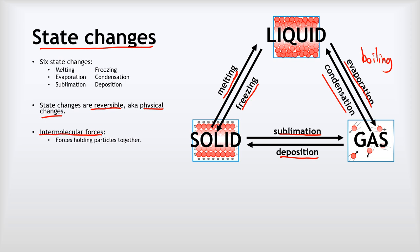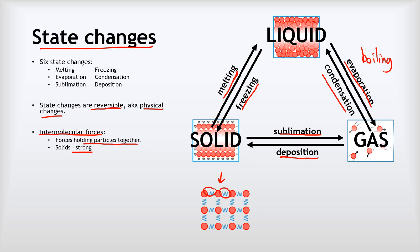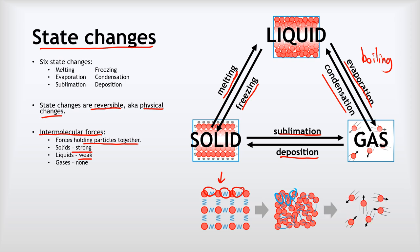To understand in more detail what's going on, we need to think about intermolecular forces — these fairly weak forces that hold particles together. In a solid we've got strong intermolecular forces, represented here by these blue springs holding the solid particles close together. In a liquid we've got much weaker intermolecular forces, represented by little blue strings. In a gas we've got no intermolecular forces whatsoever, which is why gases are able to expand into space.